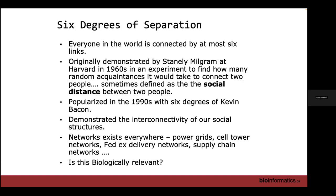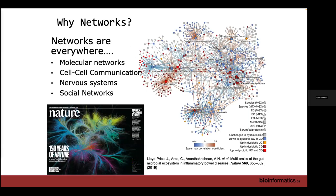So networks have always been around, but how is this relevant to biology? Networks are actually everywhere in biology — whether it's molecular networks, cell-cell communication, or nervous systems, which are networks of connectivity where connections from the brain go to your hand, your feet, all through a network of nerves. And definitely the way we live our lives, it's social networks — Facebook and other programs demonstrate how close people are even though we live miles apart. Networks are really everywhere.